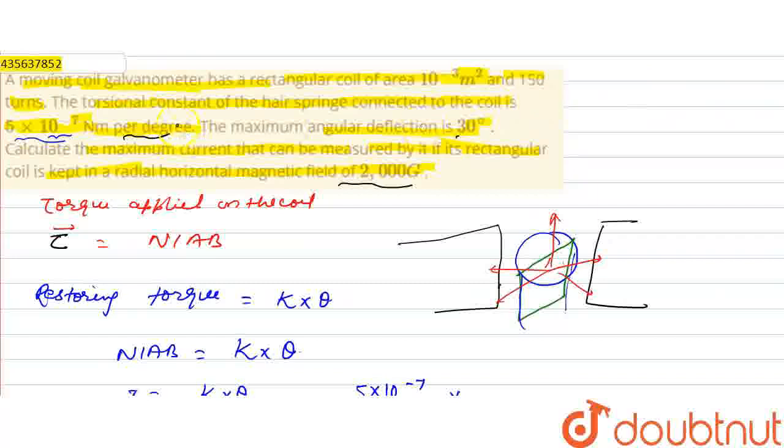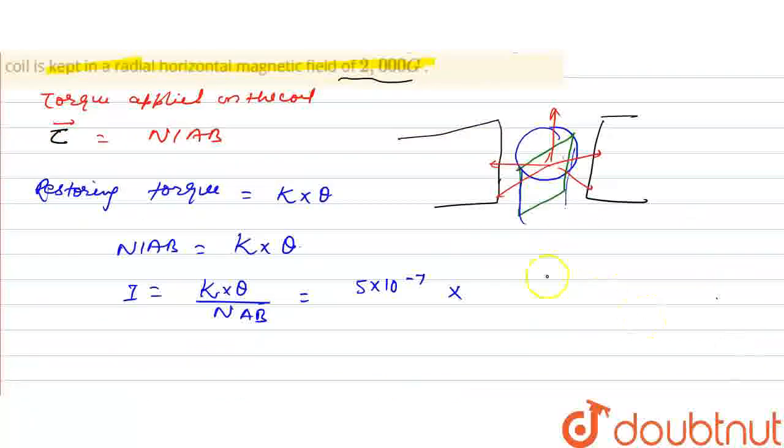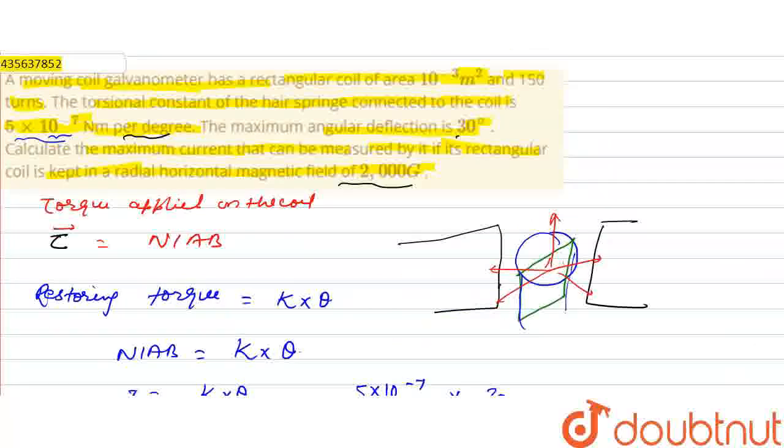We can input the number of turns 150, area is 10^-3, magnetic field is 2000 gauss.